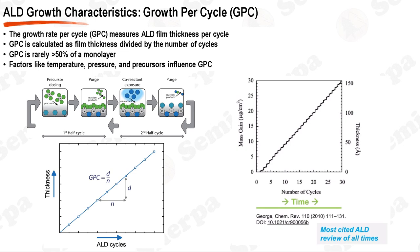However, in practice, the GPC is often less than the theoretical maximum of one atomic or molecular layer per cycle. This could be due to incomplete surface reactions, steric hindrance between reactant molecules, or limitations in precursor supply or reactant exposure. Precursor dosing and purge durations, which make up the two half cycles of an ALD cycle, can also impact the GPC. Adequate precursor dosing ensures full surface saturation, while efficient purging removes unreacted precursor molecules and reaction byproducts. The GPC can be influenced by ALD process conditions such as temperature and pressure, the properties of the precursors and co-reactants, and the nature of the substrate material.